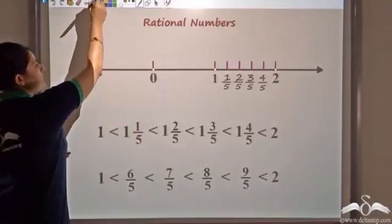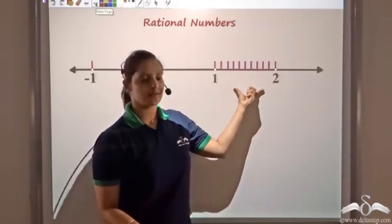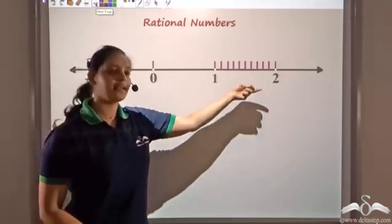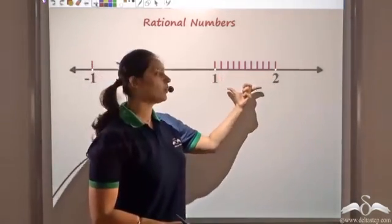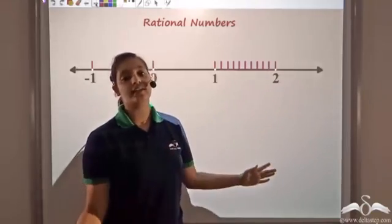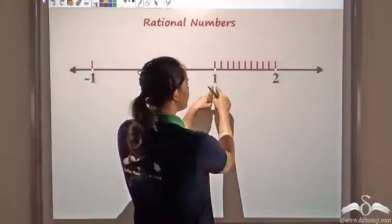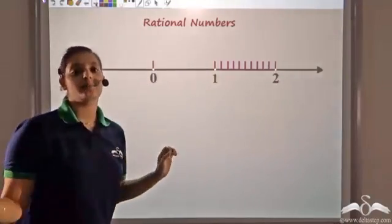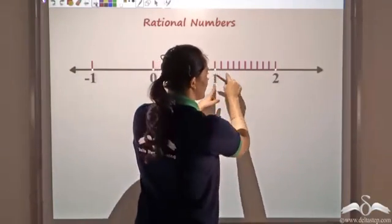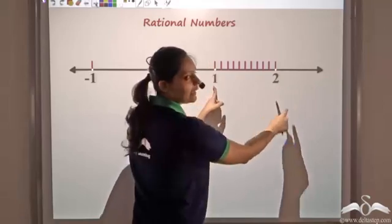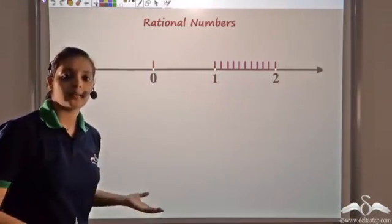So I can keep on dividing this unit length into as many parts as I want. I can divide it into 1000 divisions or 10,000 divisions and so on, and keep getting rational numbers between 1 and 2. So there are infinitely many rational numbers between 1 and 2, because I can divide this unit length into an infinite number of parts to get infinitely many rational numbers.